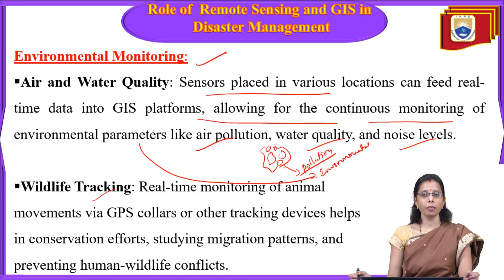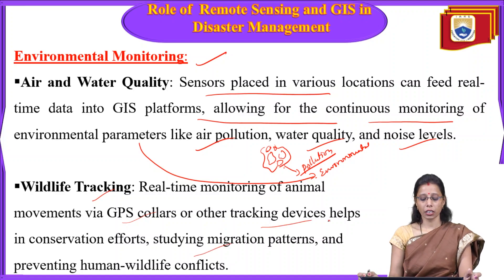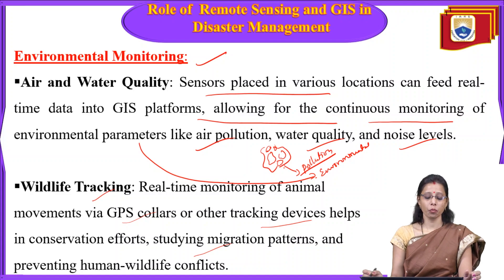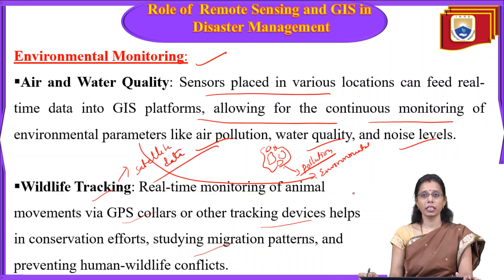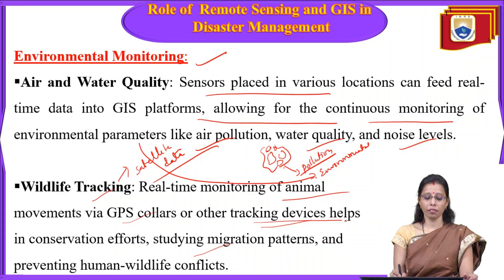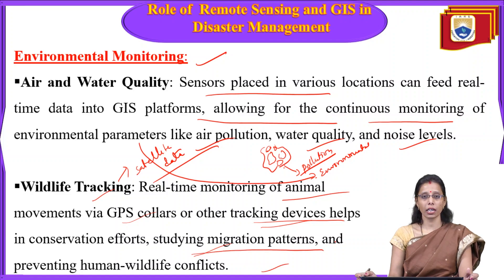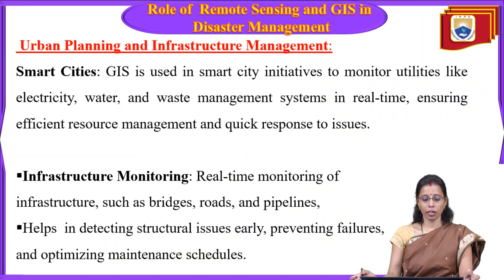Wildlife tracking is also supported by real-time monitoring. Real-time monitoring of animal movements via GPS collars or other tracking devices helps in conservation efforts, studying migration patterns, and preventing human-wildlife conflicts. Active remote sensors with different cameras provide real-time data about the movements of animals, showing from which place to which place animals are moving through the forest.